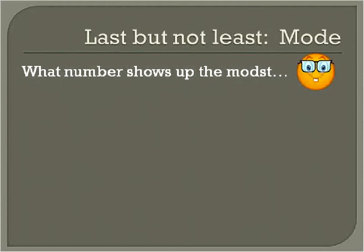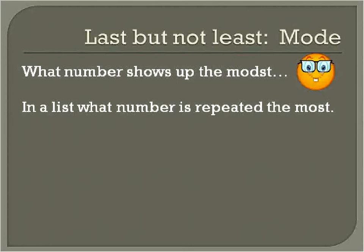The last way of finding an approximate average is called mode — whichever number shows up the most. You have a list of numbers and you choose the number that is repeated the most.